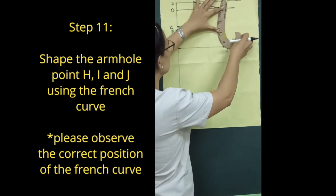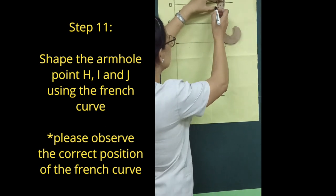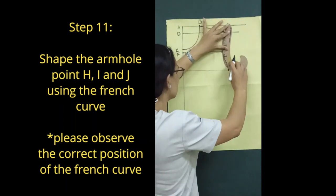Step 11: Shape the armhole point H, I and J using the French curve.